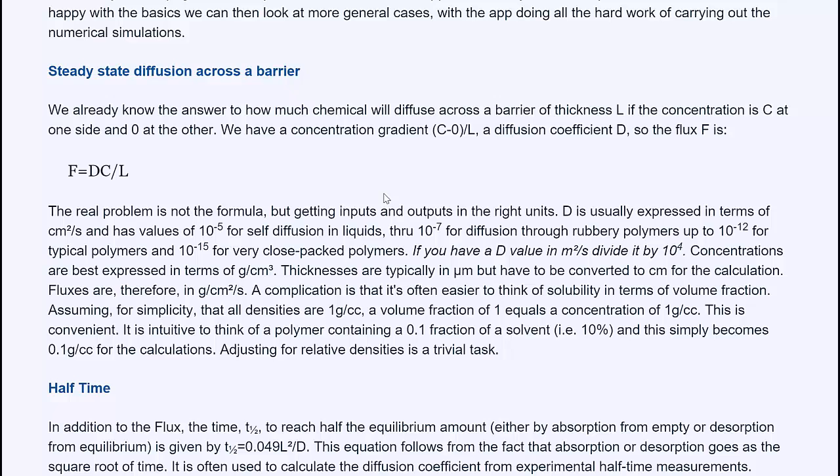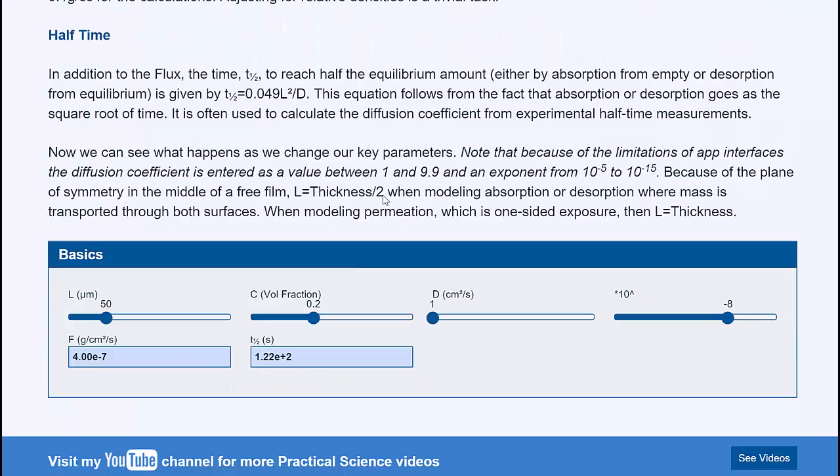The other thing you can get from a simple formula is the half time for the flux to reach the equilibrium amount. So when you start off, of course, there's no flux. As it starts to diffuse through, the flux builds up, and then it reaches constant amount. The half time just depends on 0.05 l squared over d.